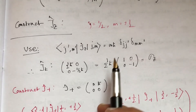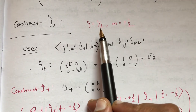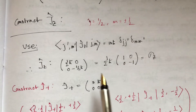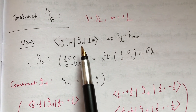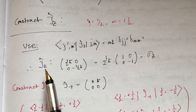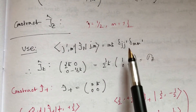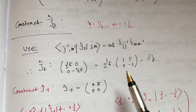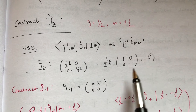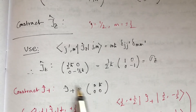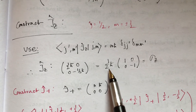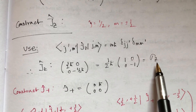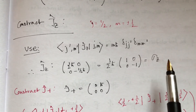We also construct the Jz matrix. Using the eigenvalue relation, this matrix is also diagonal, with the basis states |1/2, +1/2⟩ and |1/2, −1/2⟩. The matrix comes out to be (ℏ/2) times the 2×2 matrix with entries [1, 0; 0, −1]. We define this as σz — the Pauli matrix.